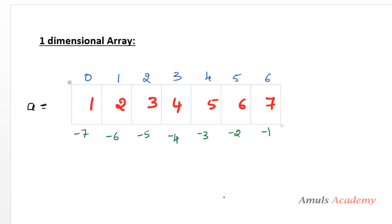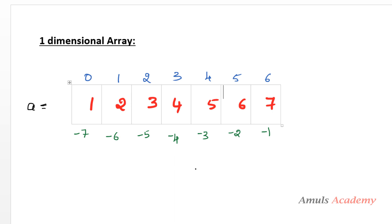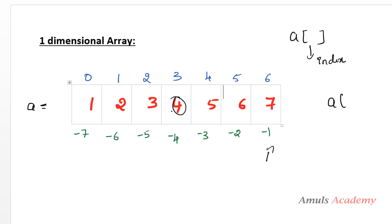A one-dimensional array looks like this. The positive index begins from zero. We can also use negative indexing — the last element is minus 1, then minus 2, minus 3, and so on. If the array name is 'a' and you want to access any element, you mention the array name followed by square brackets and the index. For example, to access value 4, its index is 3, so a[3] gives 4. Using negative indexing, a[-4] also gives 4.